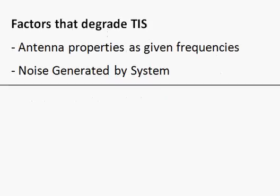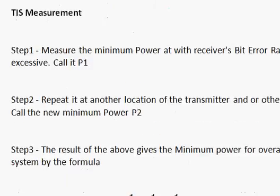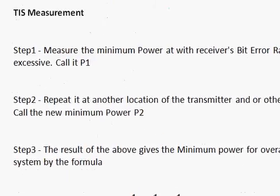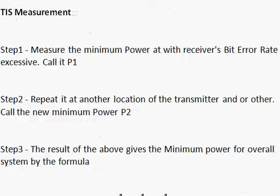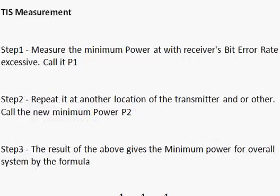How is TIS measured? We will give a basic, simplified way just to understand what is involved in the measurement. We basically measure the transmitted power at which the receiver's bit error rate is excessive or crosses a threshold. Let us call it P1. It can typically be like minus 95 dBm, minus 91 dBm, or minus 100 dBm, depending upon the sensitivity of the receiver in one particular orientation.